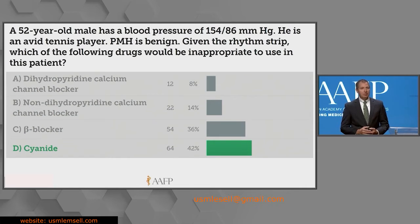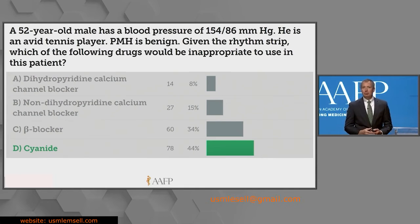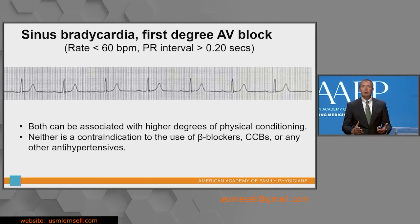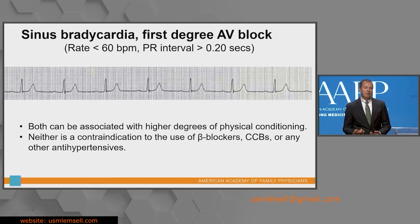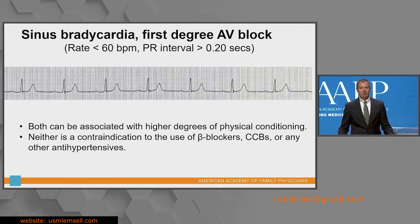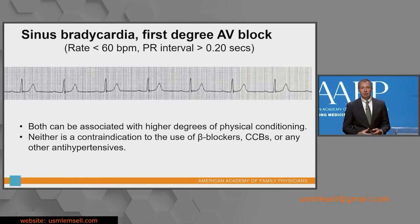About 42% are saying cyanide would be inappropriate, which means over 50% think cyanide would be appropriate — be cautious. Cyanide is never a good option. What was on this rhythm strip: a rate less than 60, so a baseline sinus bradycardia, and if you look closely, the PR interval is prolonged — sinus bradycardia with a first-degree AV block. Both can be seen in a highly conditioned patient. Neither is a contraindication to any antihypertensive drug. A first-degree AV block or sinus bradycardia are not absolute contraindications to any class of drugs.